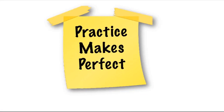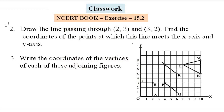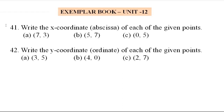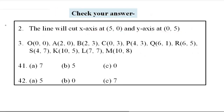Now we know that practice makes perfect, so I have given 4 questions — 2 on this page and 2 on the next page. The first 2 questions are from the NCERT book, Exercise 15.2, which are the same as the examples we discussed earlier in the video. The next 2 questions are from the Exemplar book, Unit 12, Question 41 and Question 42. These ask you to write the x-coordinate of given points. After solving, check your answers which are given here. Thank you for watching and see you in the next video.